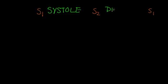So as a quick review, we have S1 and S2. And I'm going to write S1 over here again, because remember this is a cycle. So in between S1 and S2, we have systole. And between S2 and S1, we have diastole. And if you remember, the S1 and the S2 are actually caused by closing of the valves.